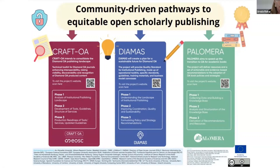These European Union funded efforts are working towards an equitable future for scholarly communication with academic communities at the center. Each project has its respective area of focus. Craftaway — creating a robust accessible federated technology for open access — has at its aim the creation of a technical toolkit for diamond open access journals. Dimas — developing institutional open access publishing models to advance scholarly communication — intends to provide quality standards for institutional publishing. And finally, Palmera — policy alignment of open access monographs in the European research area — will deliver resources and recommendations for the adoption of open access book policies.